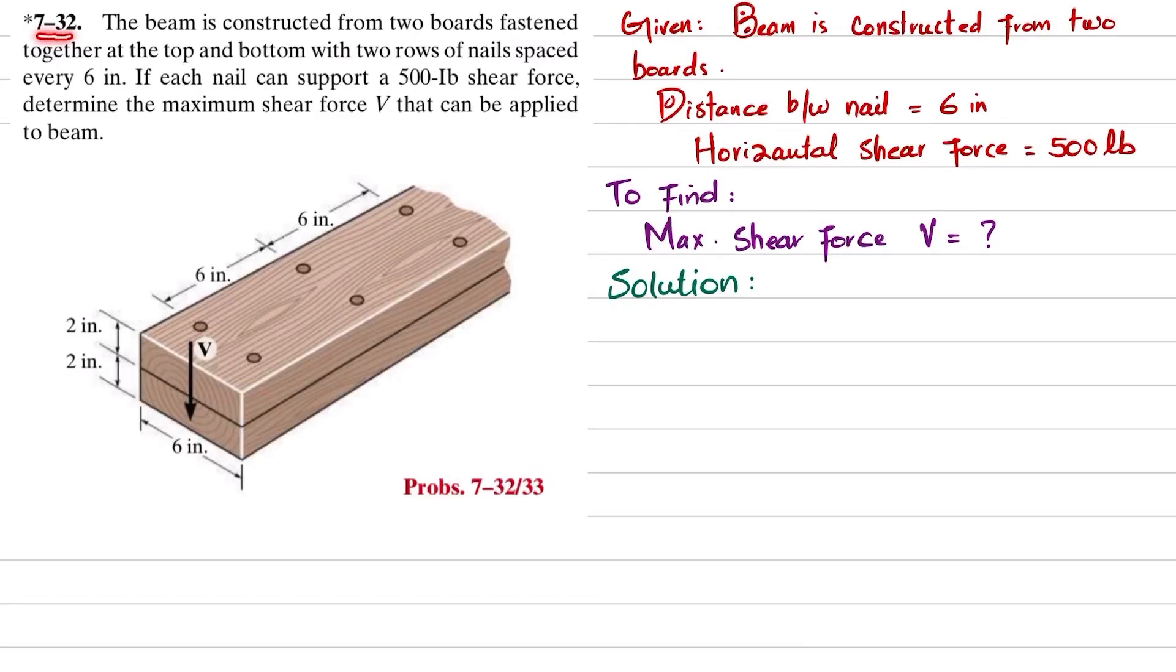Welcome back. Problem 7-32. The statement is: the beam is constructed from two boards fastened together at the top and bottom with two rows of nails spaced every six inches. If each nail can support 500 pounds shear force, determine the maximum shear force V that can be applied to the beam.